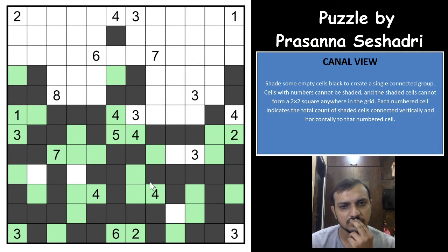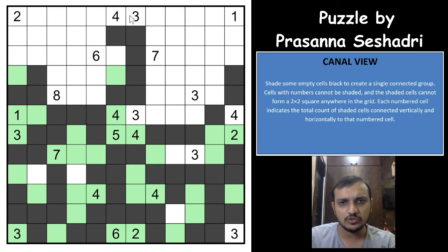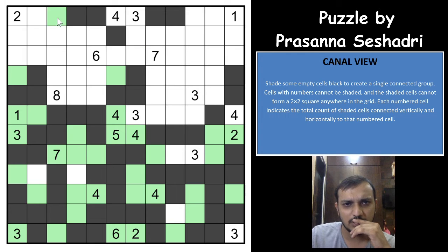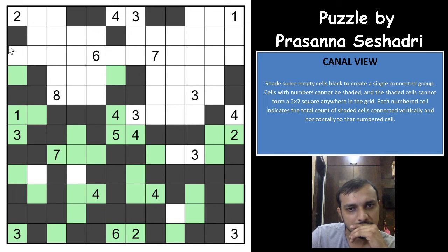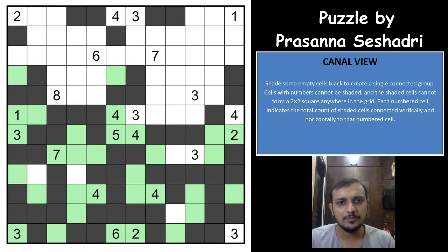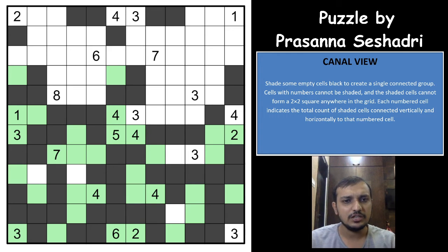For the 3 here, you can have at most 1 cell in one direction — you cannot have 2 cells shaded because both of these 3s will get a contradiction. So at least 2 cells would have to be here. For the 4 here, at least 2 cells would have to be here since you can have a maximum of 2 cells in the other direction. For the 2, at least 1 cell would have to be here. This is a really difficult puzzle — the initial logic was easy, but now it's all about eliminations.